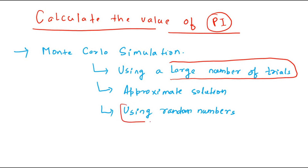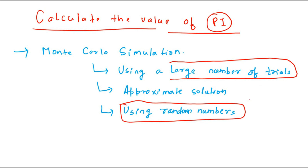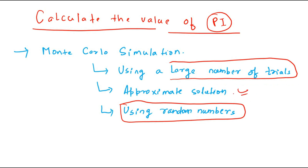We do this using random numbers. Computers help us in creating random numbers. Of course, it's very difficult to create purely random numbers, but to a large extent, computers give us a list of random numbers using which we can find the approximate solution. So before we solve this problem, let's try to understand the concept. Here is a square and there is a circle inscribed inside this square, and we need to find out the value of pi.